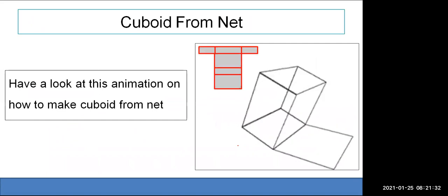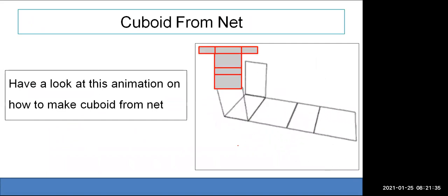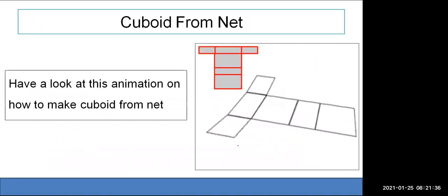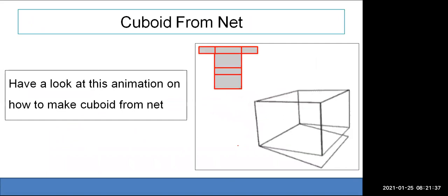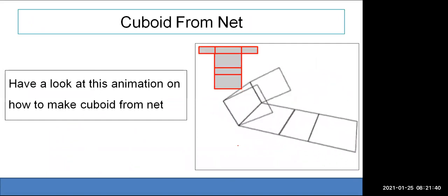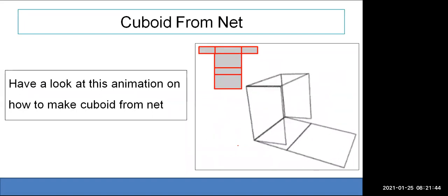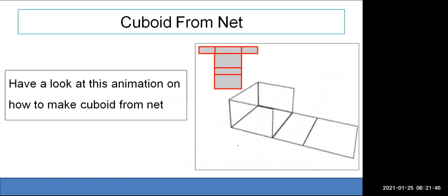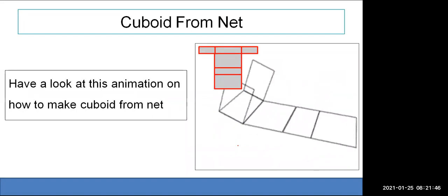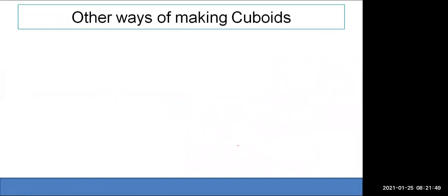Observe how the cuboid is formed — if I open the cuboid, this is how it looks. And if I join it again, the box is formed.